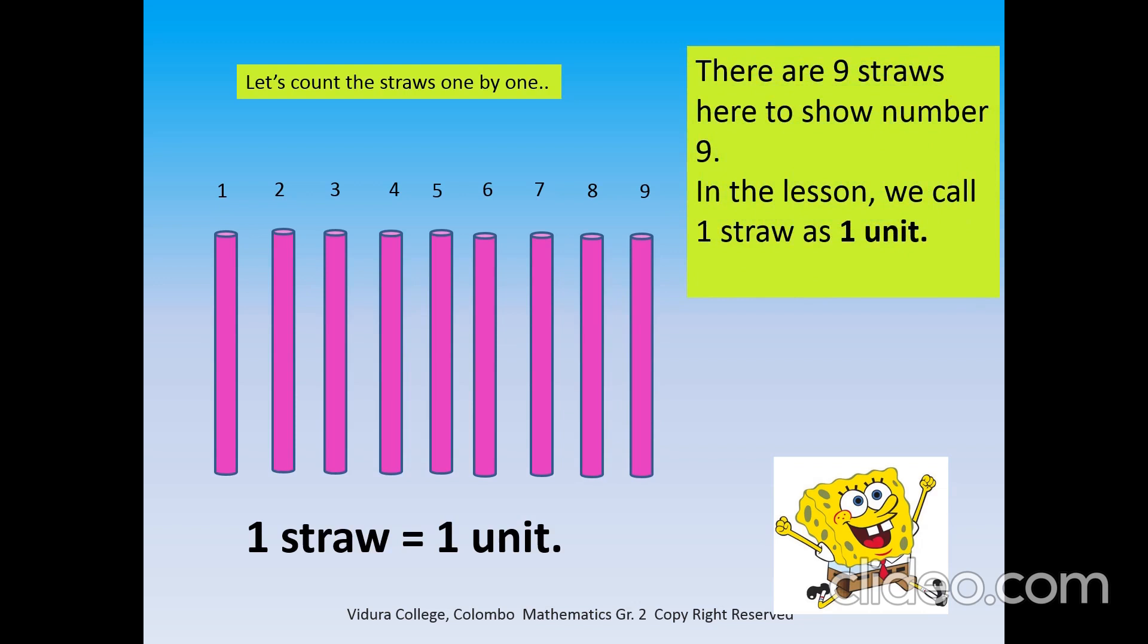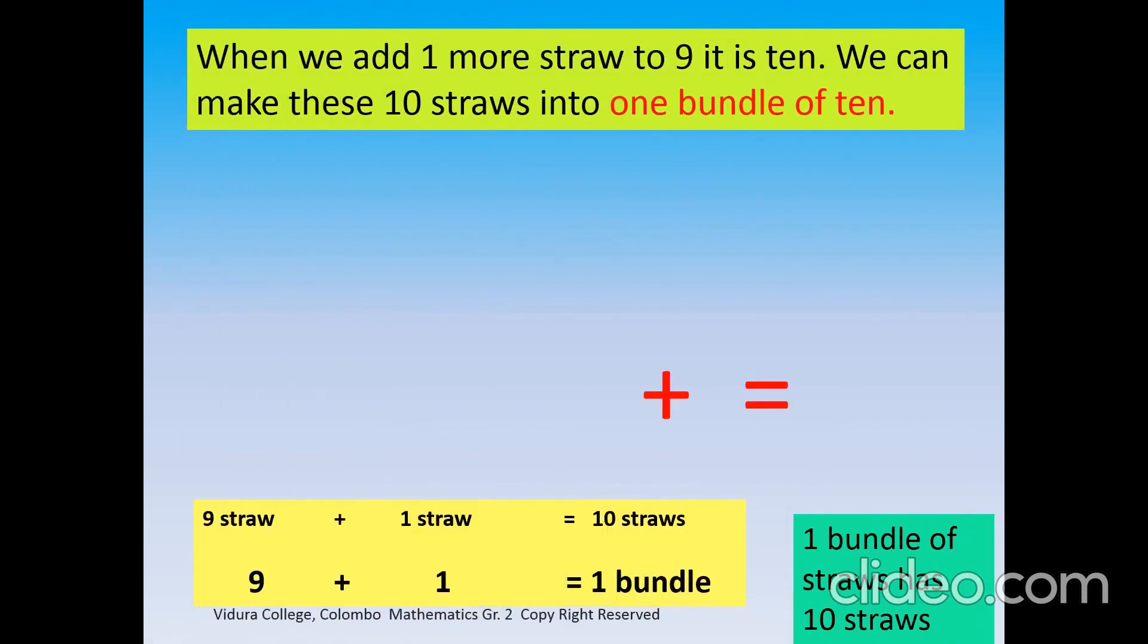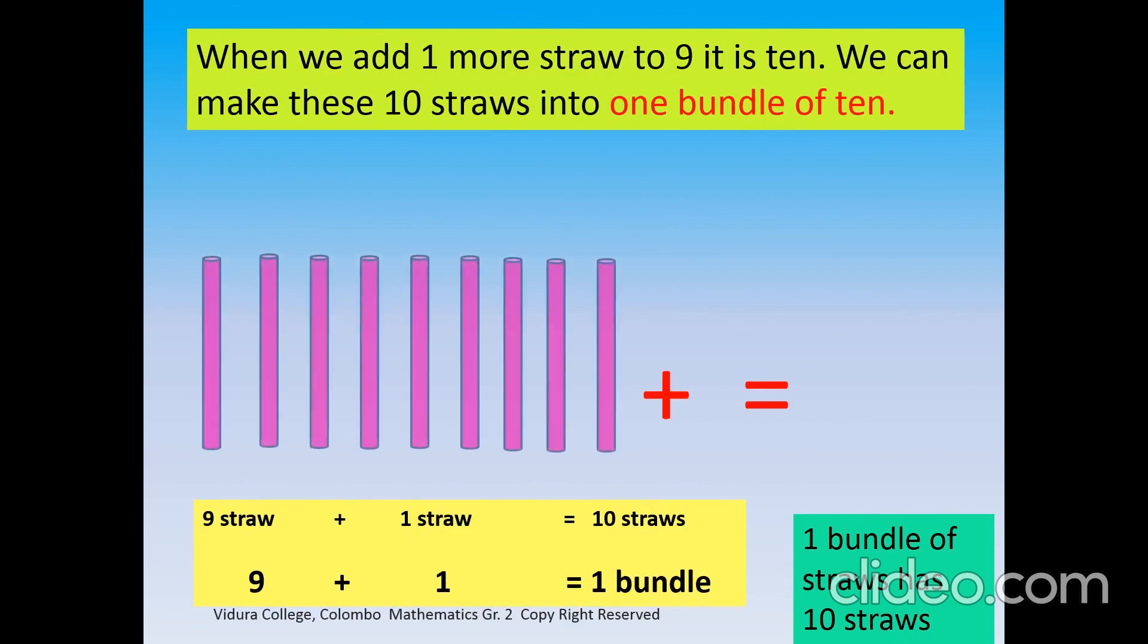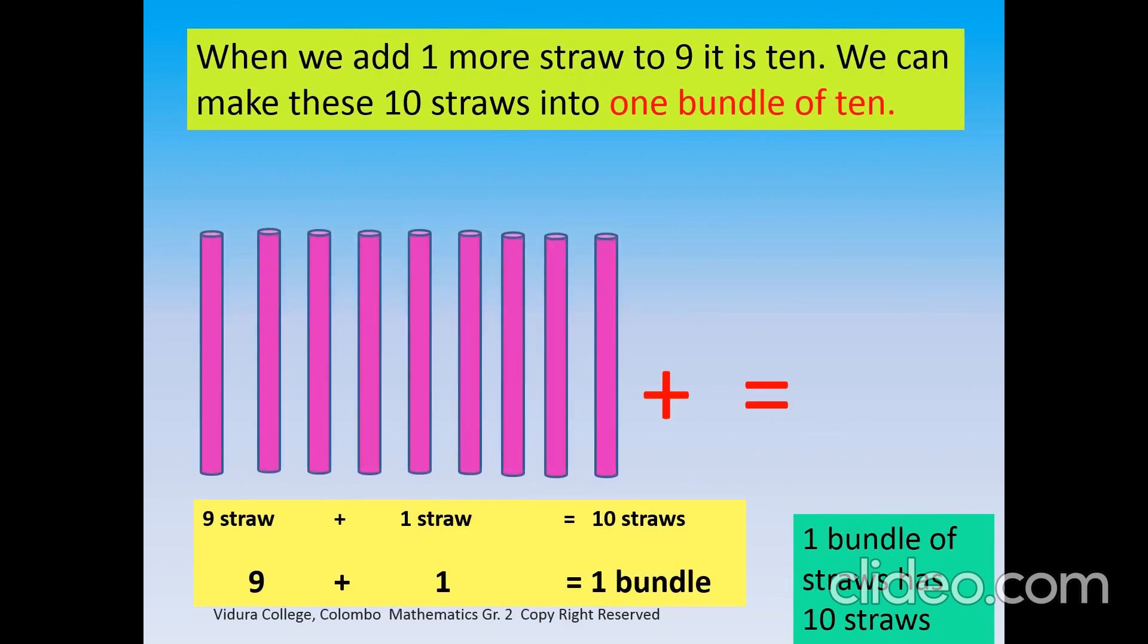In the lesson, we call one straw as one unit. Look at the straws. There are nine straws. When we add one more straw to nine, it is ten. We can make these ten straws into one bundle of ten. One bundle of straws has ten straws.